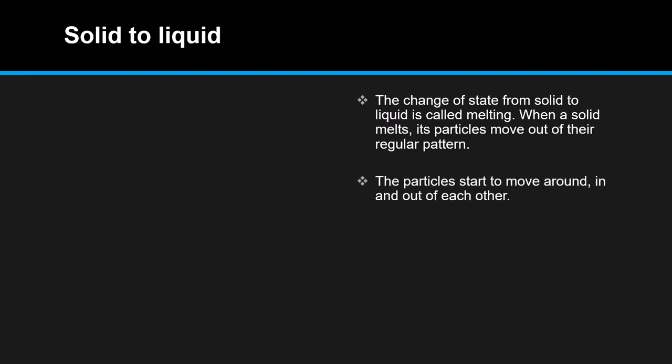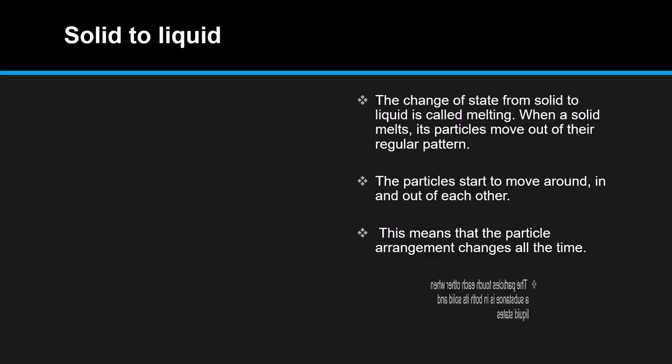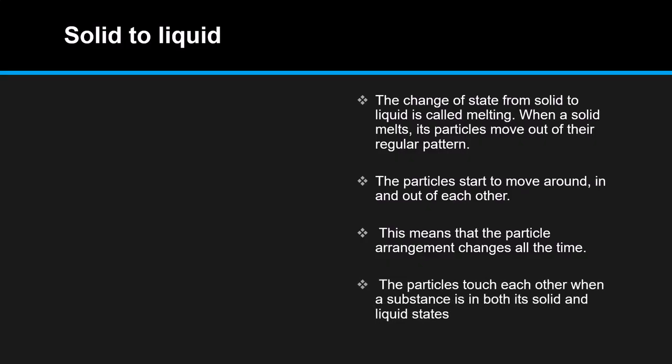The particles start to move around in and out of each other — they spread out and are no longer fixed together like in a solid. This means the particle arrangement changes all the time whenever the substance is changing state. The particles touch each other when the substance is in both its solid and liquid state.